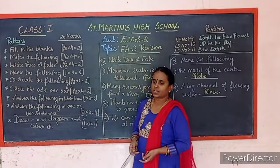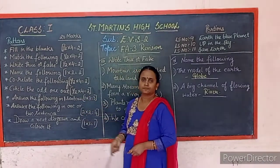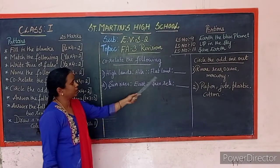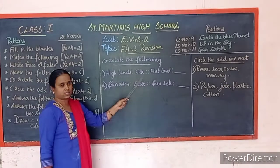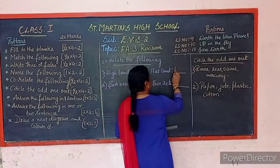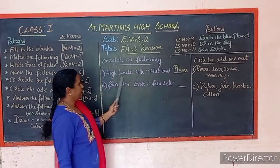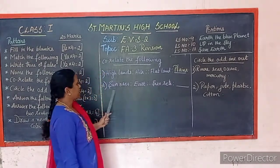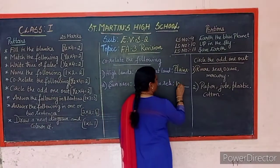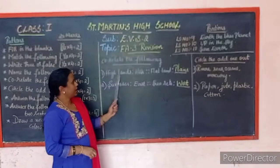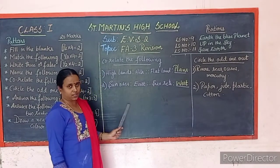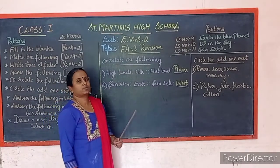Correlate the following: Highlands — hills; Flatland — plains (P-L-A-I-N-S). Sun rises in which direction? The sun rises in the east and sets in the west. You may be asked from the textbook, so you have to read the textbook, children.